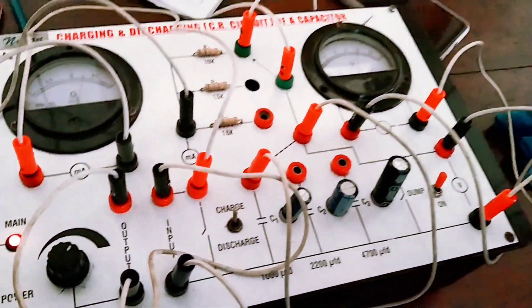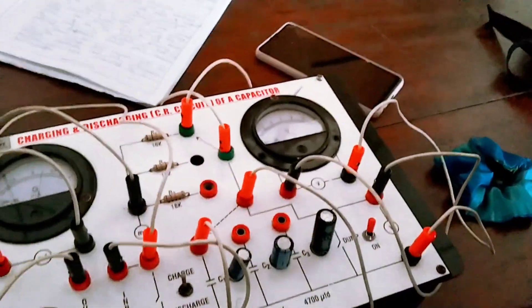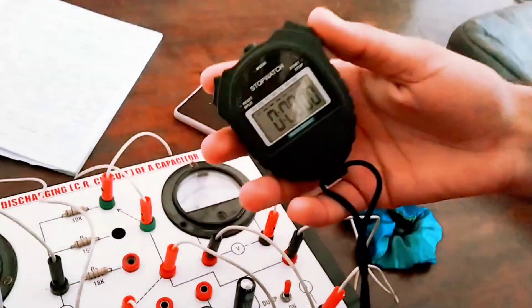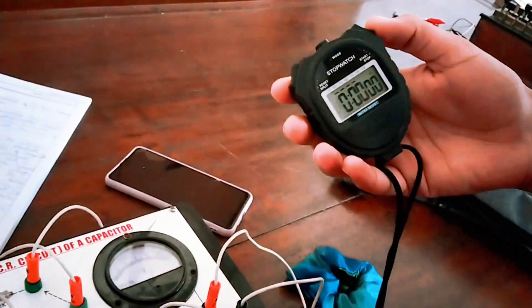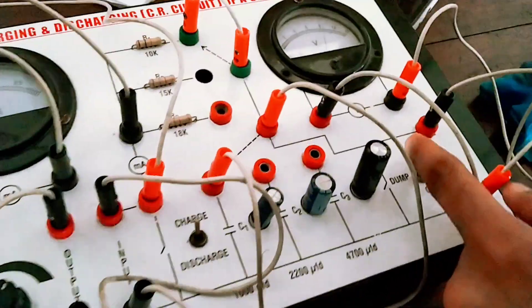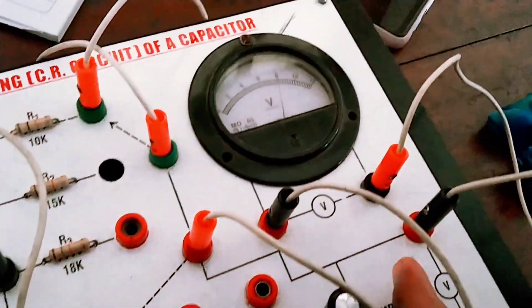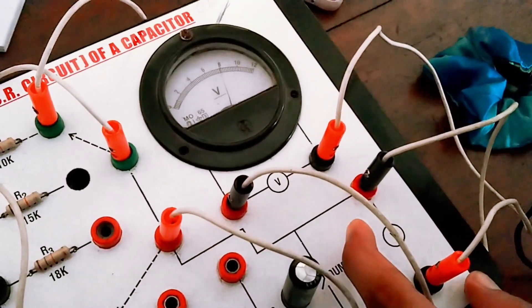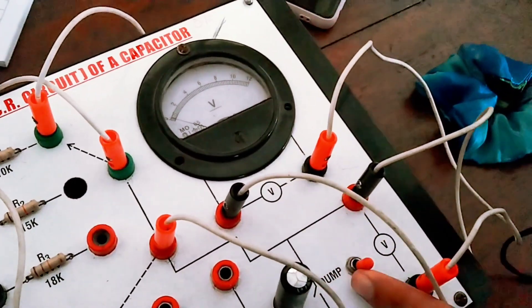For this we will measure the time taken for the charging of one voltage. This is the stopwatch. I can damp it if you want to discharge it immediately - so use the damping. Now it is damped.